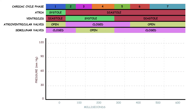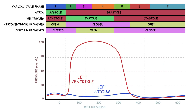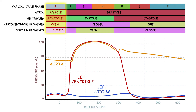Now let's graph pressure changes over the course of the cardiac cycle in the left atrium, the left ventricle, and the aorta. During atrial contraction, there is an increase in pressure in the atria, and also a slight increase in ventricular pressure as the atria pump blood into the ventricles and ventricular volume increases. During isovolumetric contraction, there is a rapid increase in pressure in the ventricles as they contract and the AV valves close.